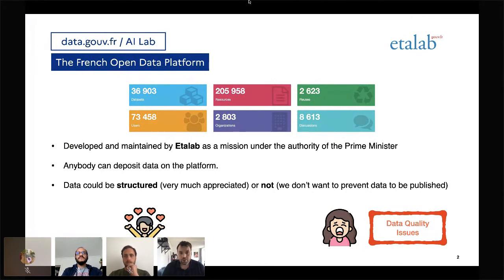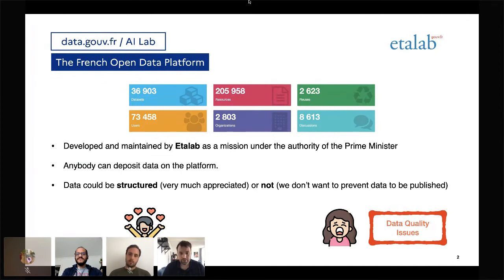The French Open Data Platform is addressed to every French administration that needs to publish their data in open data. As of today, we have more than 36,000 datasets and more than 200,000 resources. Among these different resources, we have many CSV files.